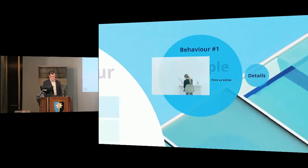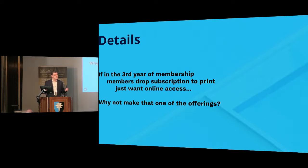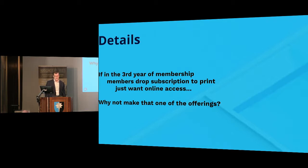Let's give some examples. Let's say you've got print and online content — online content that you publish and you still have some print. But you've noticed that in the third year of membership, many of your members drop their subscription to print and just want online access. So why not make that one of the offerings? That's the kind of information you can glean out of a system that tracks behavior.